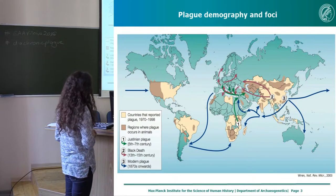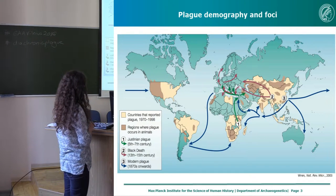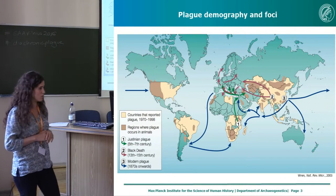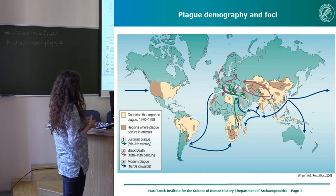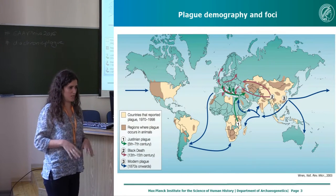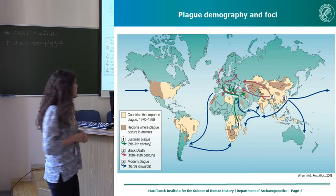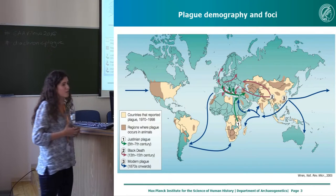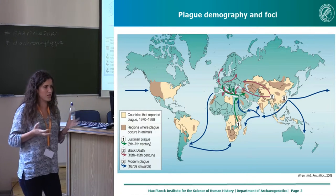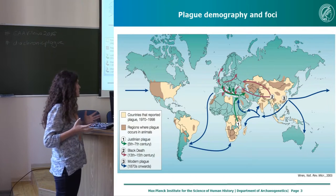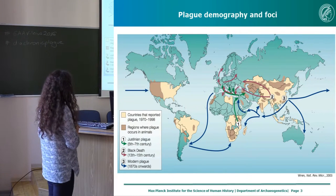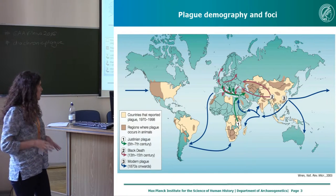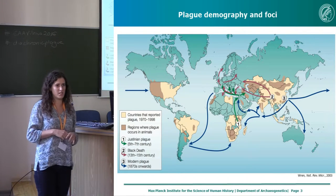This is a map that shows the regions where there are sylvatic plague foci and how this coincides with countries that reported plague in recent years. These foci have either been there for several thousands of years — for example, the ones around the Caspian Sea or the ones in East Asia — but others are directly related to the rapid and long-distance travel of the disease seen through the three plague pandemics.